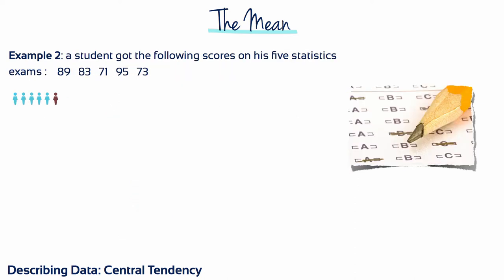In example two, a student got the following scores in his five statistics exams. Adding those five exam scores together and dividing by five gives us the mean exam score of 82.2.